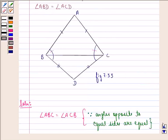Since it's given to us that AB is equal to AC, therefore angles opposite to them will also be equal. Therefore angle ABC is equal to angle ACB.